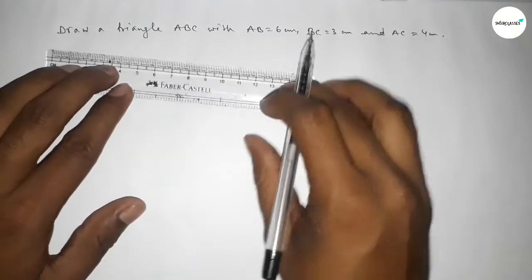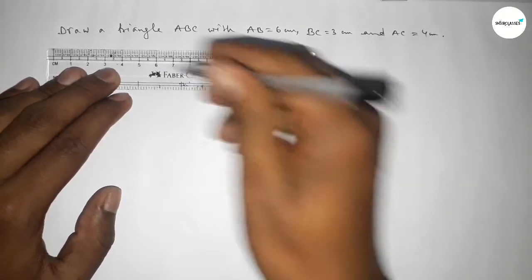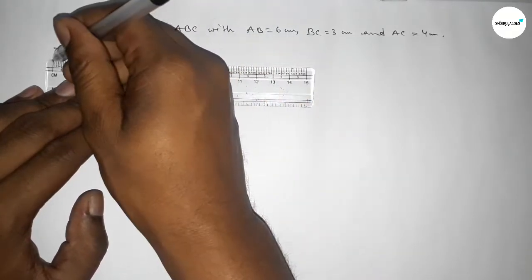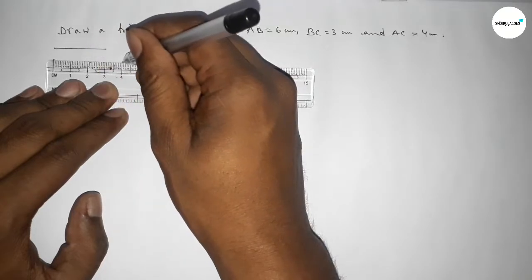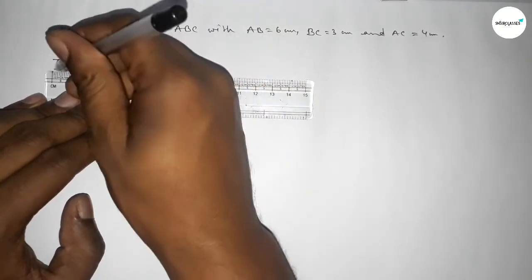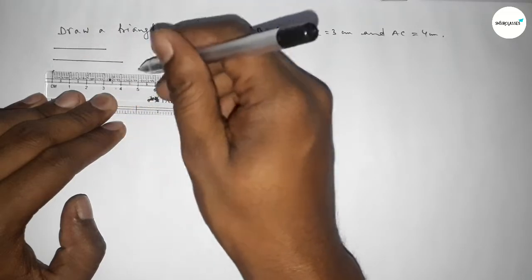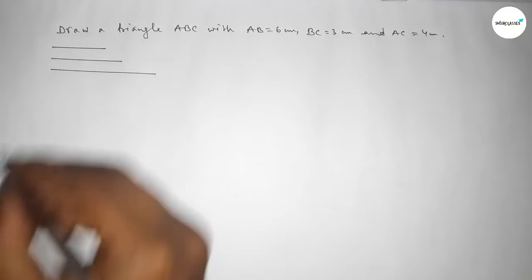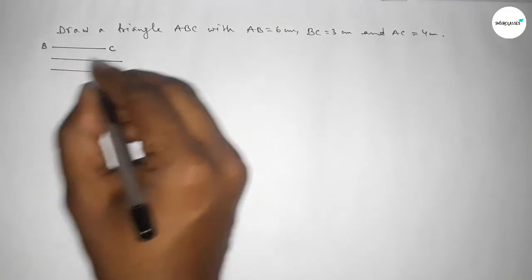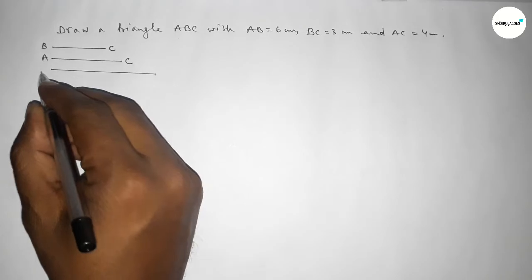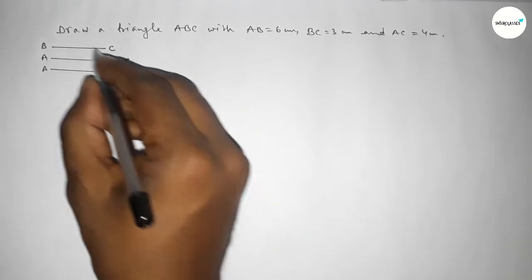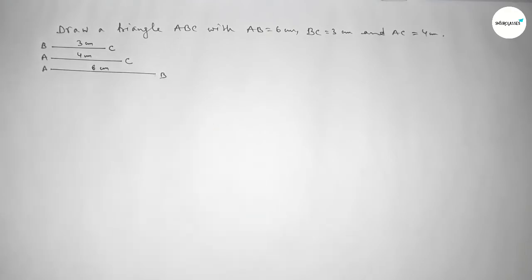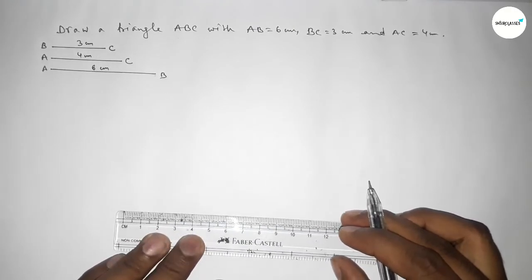First, here is a line of length 3 centimeters, another line of length 4 centimeters, and a line of length 6 centimeters. So this one is the BC line, this one is the AC line, and this one is the AB line — 3 centimeters, 4 centimeters, and 6 centimeters.